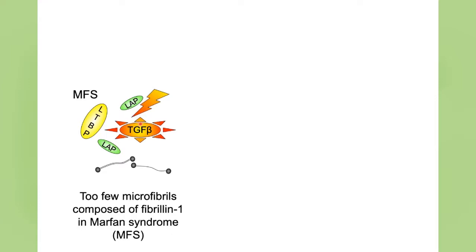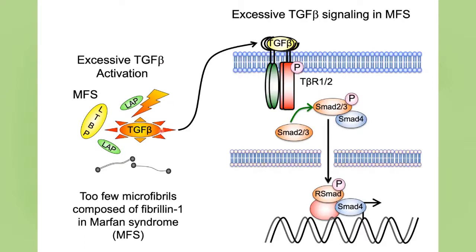In Marfan syndrome, having too few microfibrils leads to excessive release of TGF-beta, which binds to its receptor on the surface of cells and drives cellular performance. What I will emphasize is that conditions caused by the same general mechanism tend to look like each other — and that has prognostic significance. It also has relevance to what type of imaging would be done, how often, and what treatment strategies might work best.